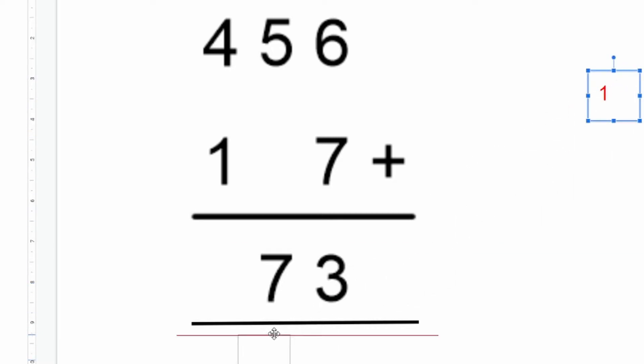On our next column we have a five and a seven. Now normally we just say that five add two is seven, but we've also got our one regrouped underneath here. So we're going to know that five add one that we've already got is six.